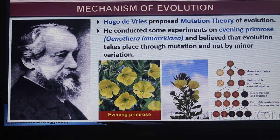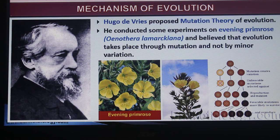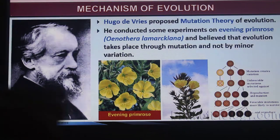Darwin says there are variations in the environment, but how do variations occur? This is explained by the mutation theory. Hugo de Vries conducted experiments on evening primrose, showing that mutations cause variation.